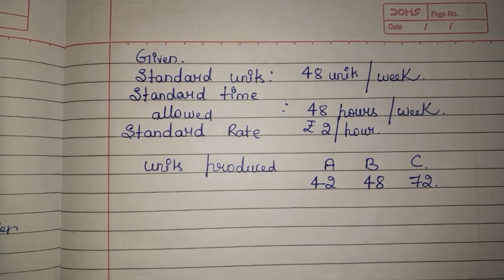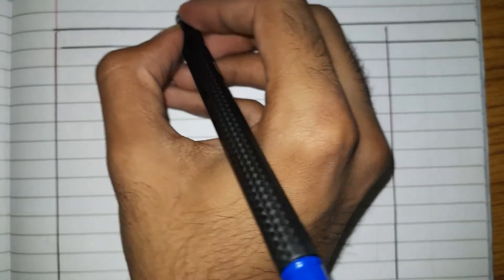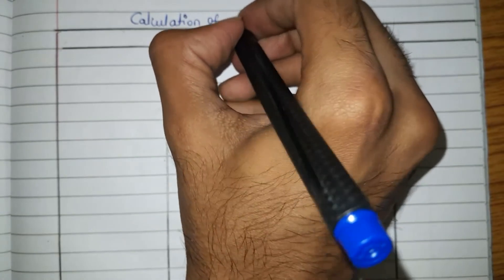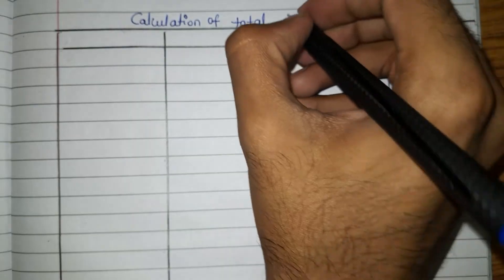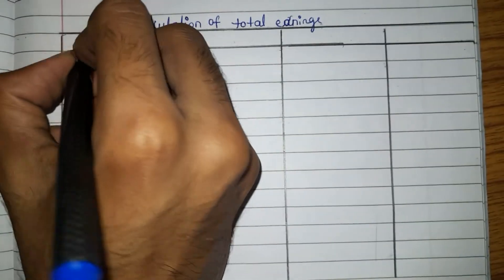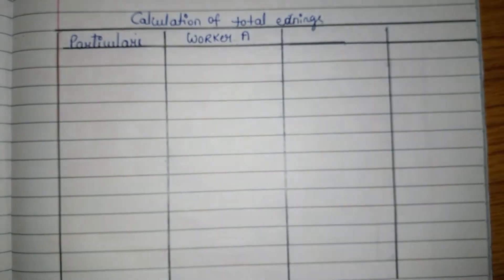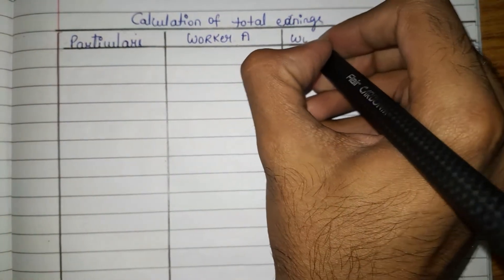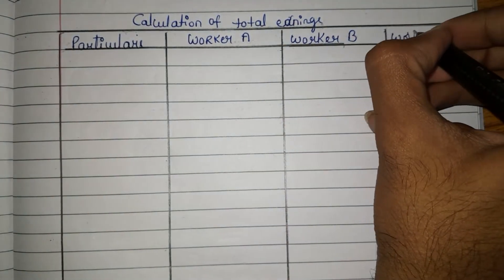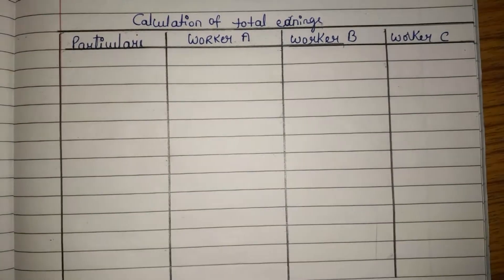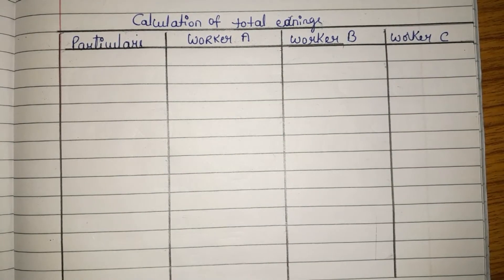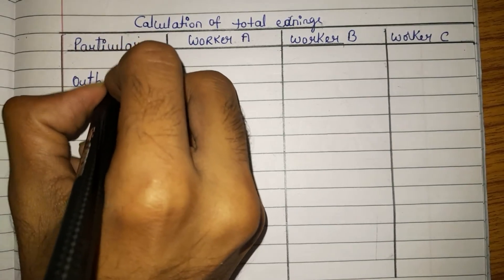Now let us see how much earnings each worker will get. This will be the format. Let us write at the top: 'Calculation of Total Earnings.' Here we have particulars, and then columns for Worker A, Worker B, and Worker C — three columns, one for each worker. First, let us write the output.